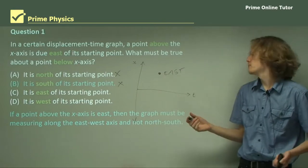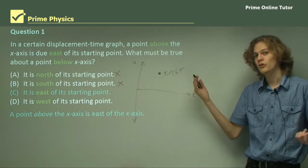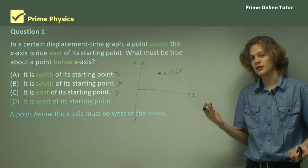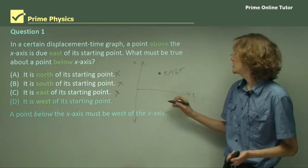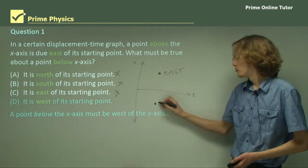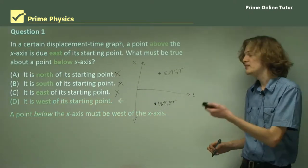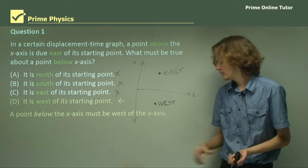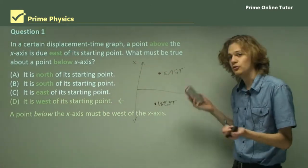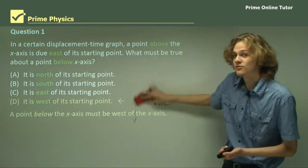So right away we can see that a point below the x-axis doesn't mean north or south of the starting point — we can't gain that information from this graph because it only tells us east and west. So the answer has to be D. If it were east of the starting point it would be above the x-axis, so that's not the right answer. Finally, west of the starting point — if it is below the x-axis it's on the opposite side of the displacement, so a point below must be west of the starting point. D is the right answer. Of course, not all displacement graphs have east and west — some have left and right, up and down, forward and back, or any other dimension.